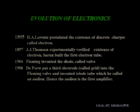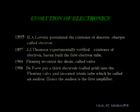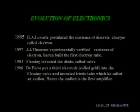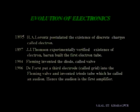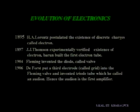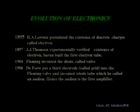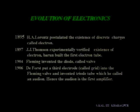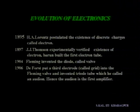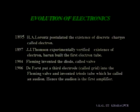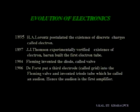One electrode is the cathode and another is the anode. In 1906, D. Forest put a third electrode, called a grid, into the Fleming valve, which was discovered in 1904. This particular device is called a triode valve, because it has got three electrodes. The diode has two electrodes — cathode and anode — and the third one is the control grid. This tube, known as the triode valve, was called an audion. And hence, the audion is the first amplifier, whose basic function is amplification.